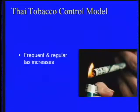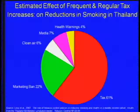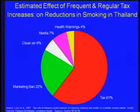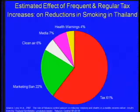They've had six tax increases. Ron Levy's Sim Smoke model estimates that tax increases contributed over 60% to the 25% reduction in smoking prevalence in Thailand. Basically, without tax increases nothing else works — but tax increases alone are also not effective. You have to have the clean air laws, the media, the health warnings, and the marketing ban to change social norms and build public support for tax increases.